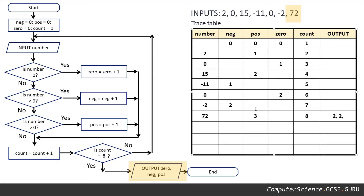Our pos variable — the last value recorded in there was a number three. And that's our answer. So by now we should have realized what this trace table and flowchart is doing. This algorithm is recording how many positive, negative, and zero numbers we have out of a list of inputs.